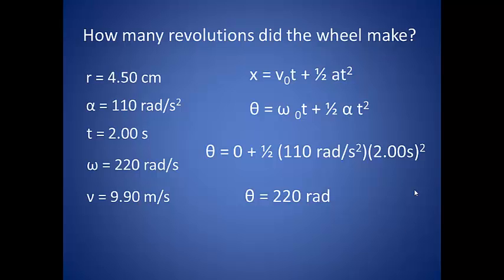So then how many revolutions would our wheel make in this amount of time? We know that one revolution is equal to 2 pi radians. To convert this,